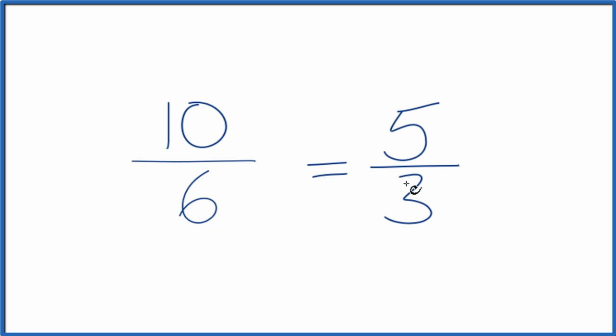Do note that 5 thirds is an improper fraction. The 5, the numerator, is larger than the denominator, so we could change this to a mixed number.